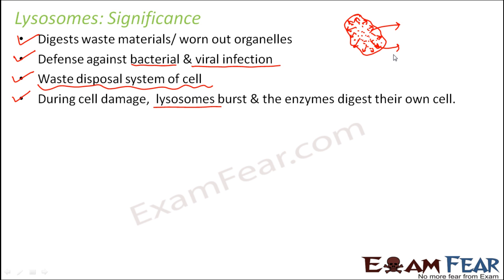When the enzymes are released into the cell, they can very easily start eating up everything that makes up the cell — because various cell organelles, the cell membrane, everything is made up of one of these components: nucleic acids, proteins, lipids. So these enzymes will start digesting all of them and finally the cell will be destroyed. That is why lysosomes are called suicidal bags of the cell — because the enzymes present inside the cell can destroy that cell itself. Suicide means when somebody kills himself or herself; here the cell gets destroyed because of the enzymes which were present inside that cell only.